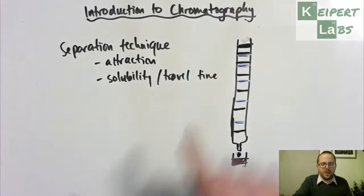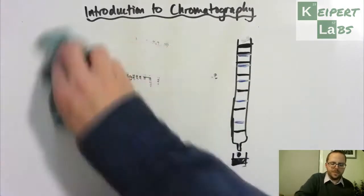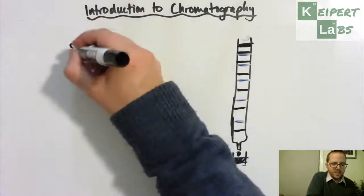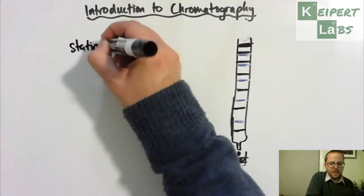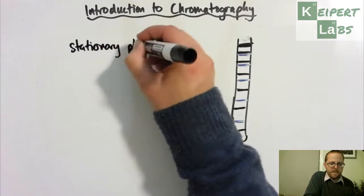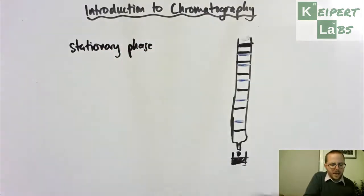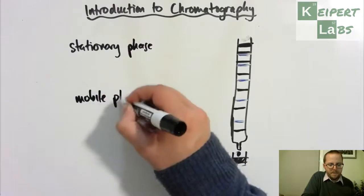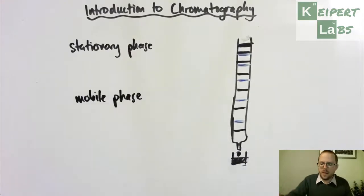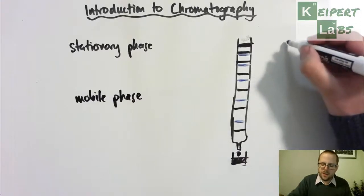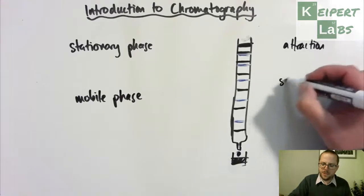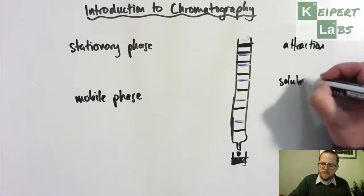So in chromatography, we have essentially two key components: what we call a stationary phase, or medium, and a mobile phase. So we talked about this idea that we're separating based on attraction, and we're separating based on solubility.